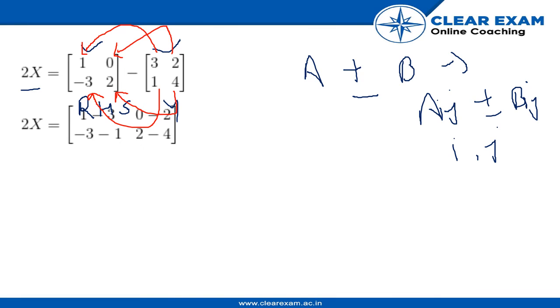Let me erase the arrows. So we get our simplified matrix as this thing, and now they will further simplify the right hand side matrix. So we get our 2X as this matrix. Now the next step is very simple.